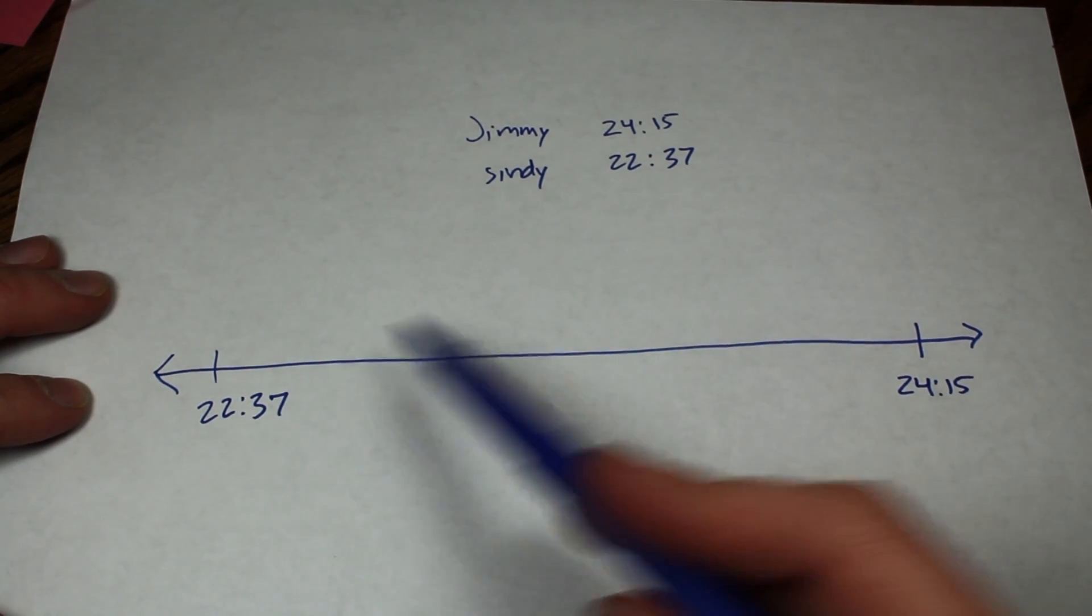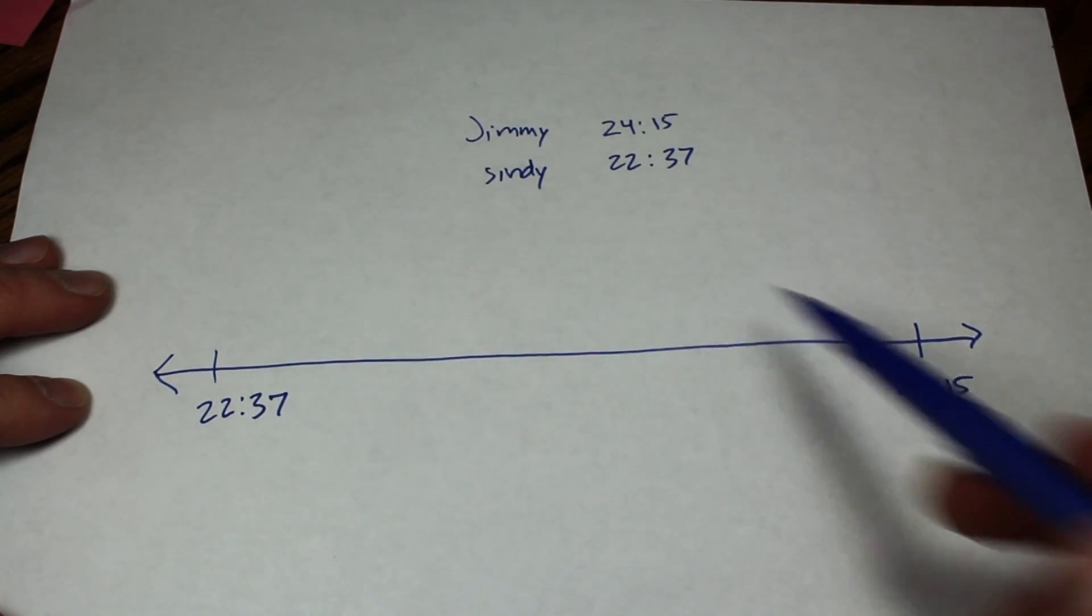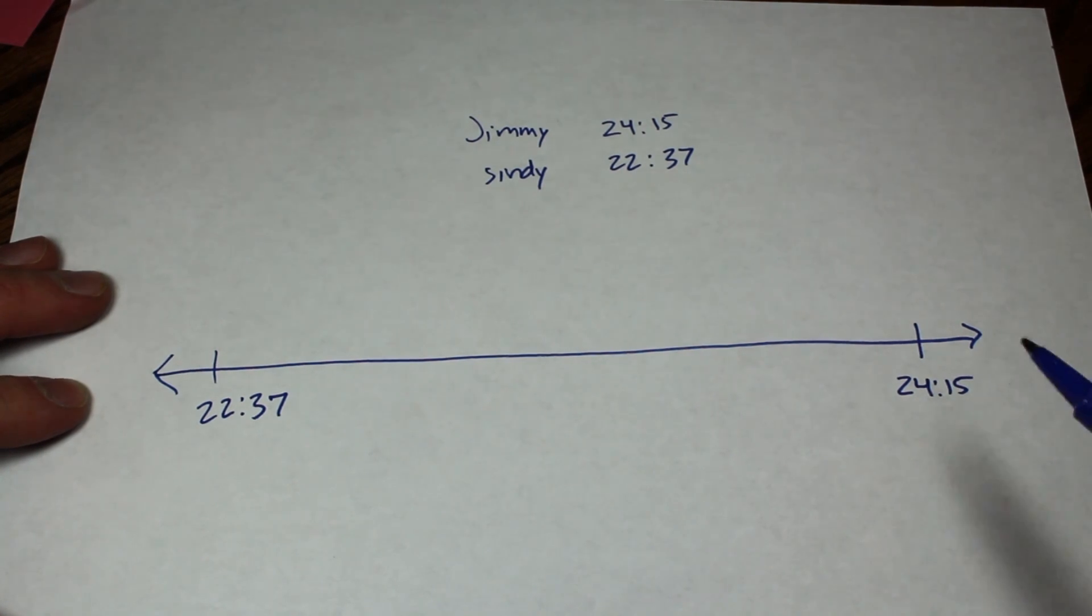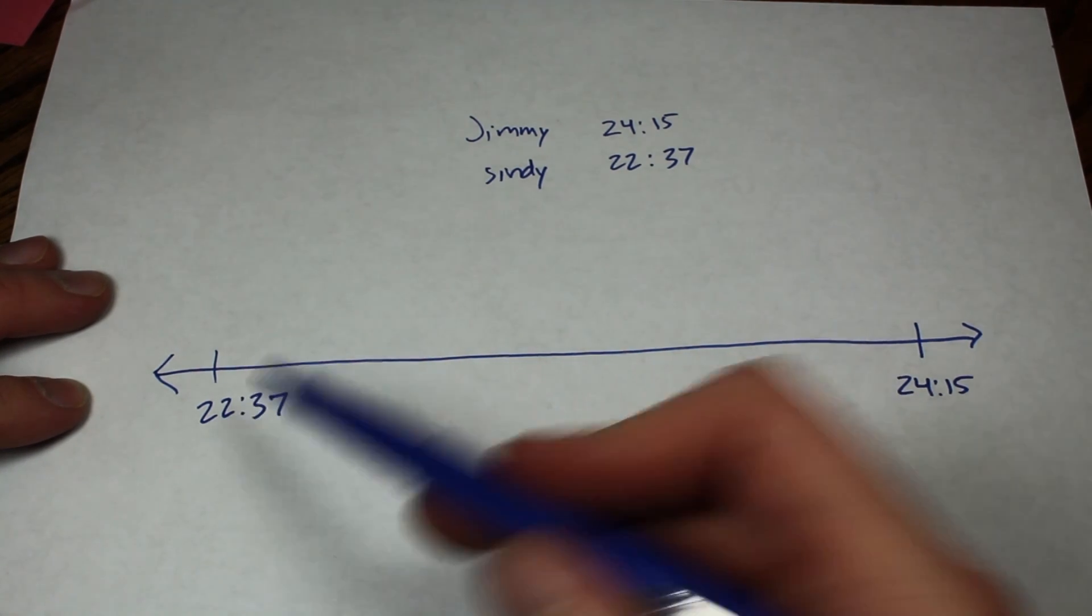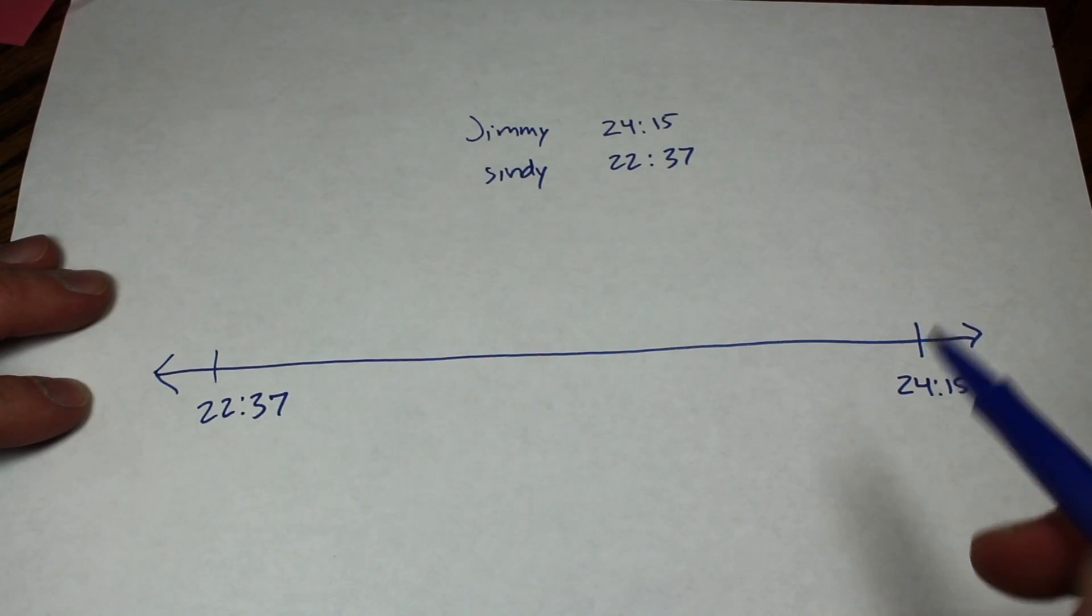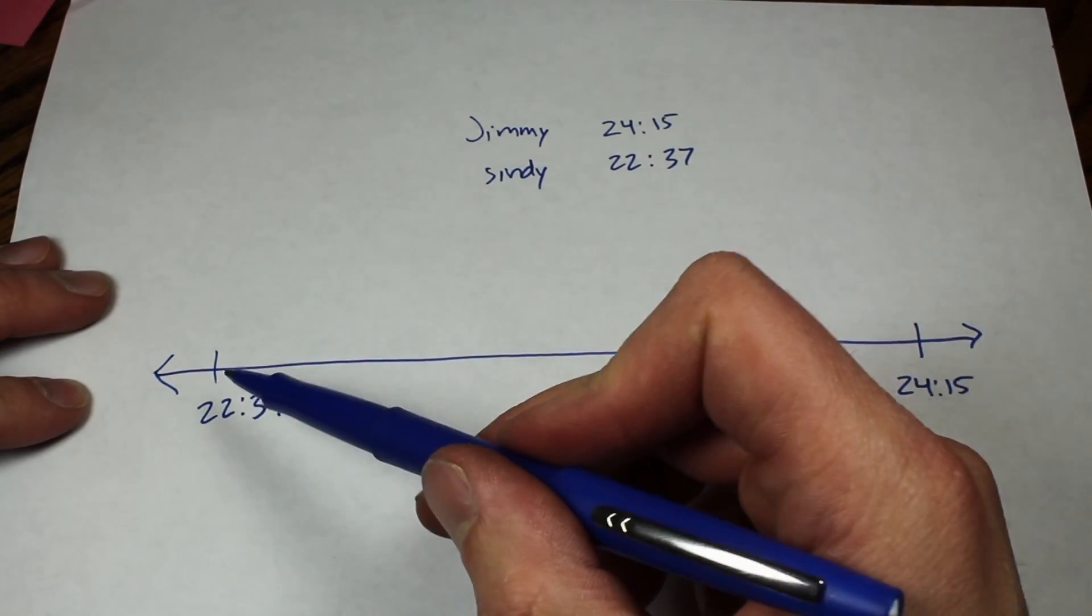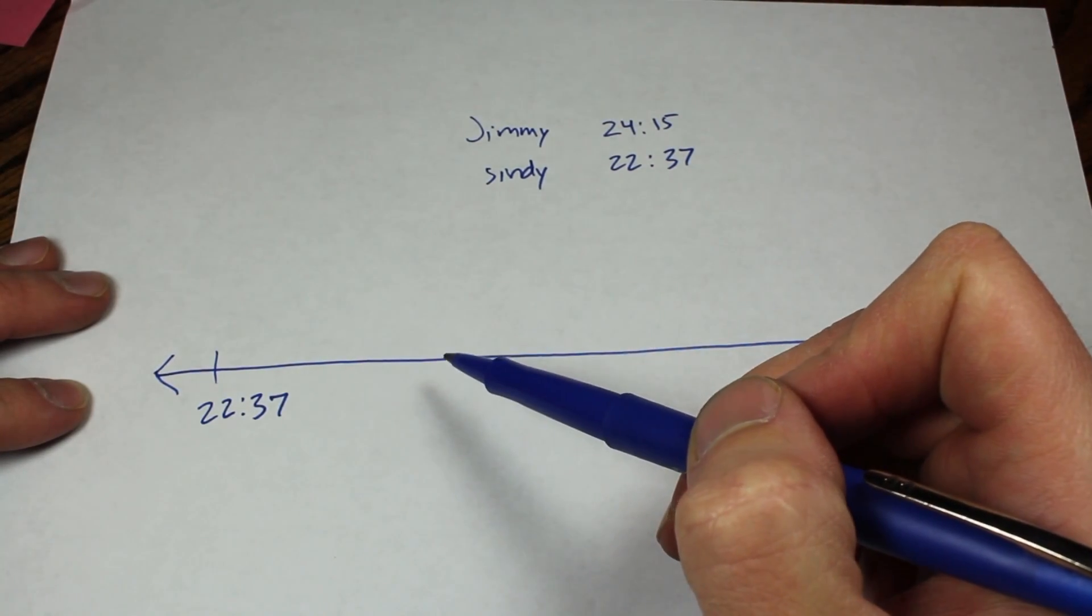So now we need to figure out what is the difference in time between these two times. So again, we're going to work our way across from one side to the other in increments, and we're going to break it up so that it's easier to work with.